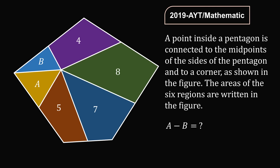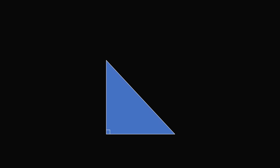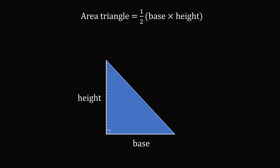Before I solve this problem, I want to take a step back and review a fundamental concept. Let's start out with a right triangle. Suppose we know the value of its base and its height. The area of the triangle is equal to one-half the base times the height. But this formula applies not only to right triangles — it applies to any triangle.